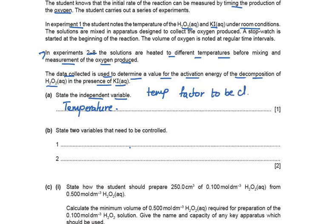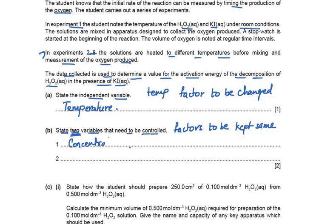Next: state two variables that need to be controlled — factors to be kept the same. Since we are planning experiments at different temperatures, other factors must remain constant. The concentration of hydrogen peroxide should be kept the same, as well as the volume of hydrogen peroxide. Similarly, the concentration and volume of potassium iodide should also be kept the same. Any two of these four factors can be stated as the answer.